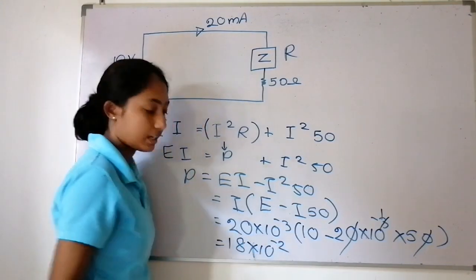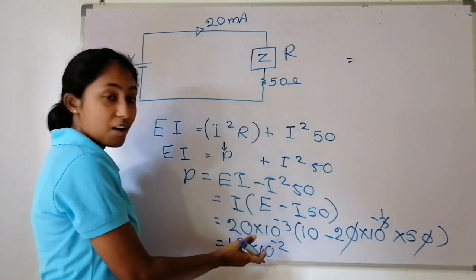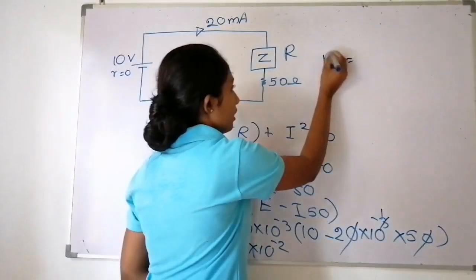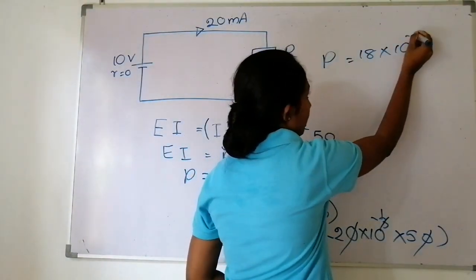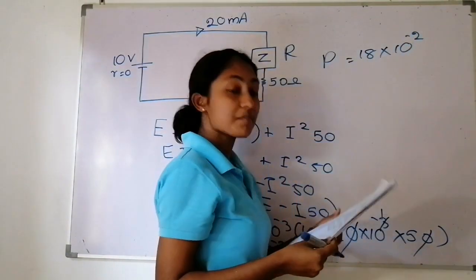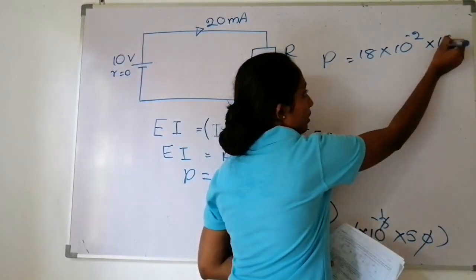Calculating this gives us R equals 500 ohms. This is the resistance value we were looking for.